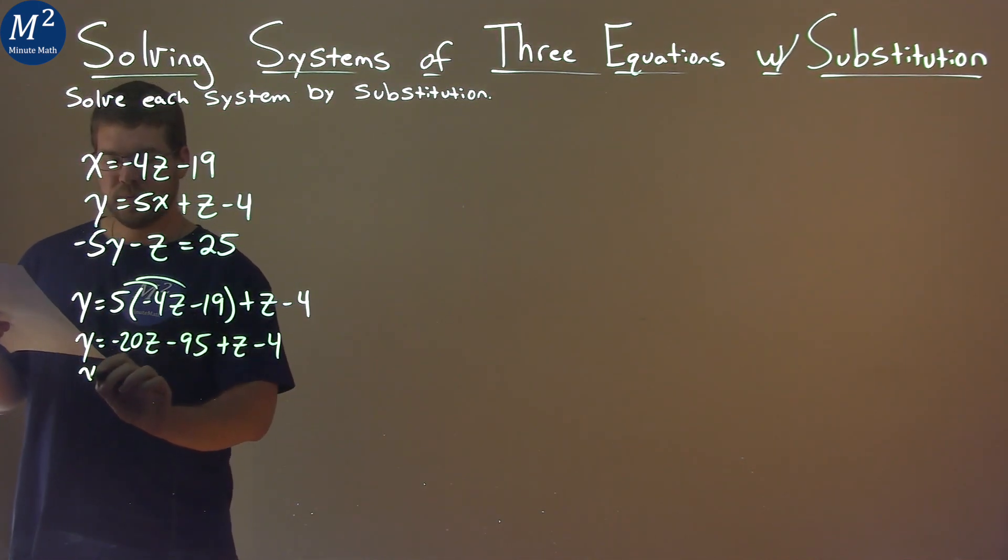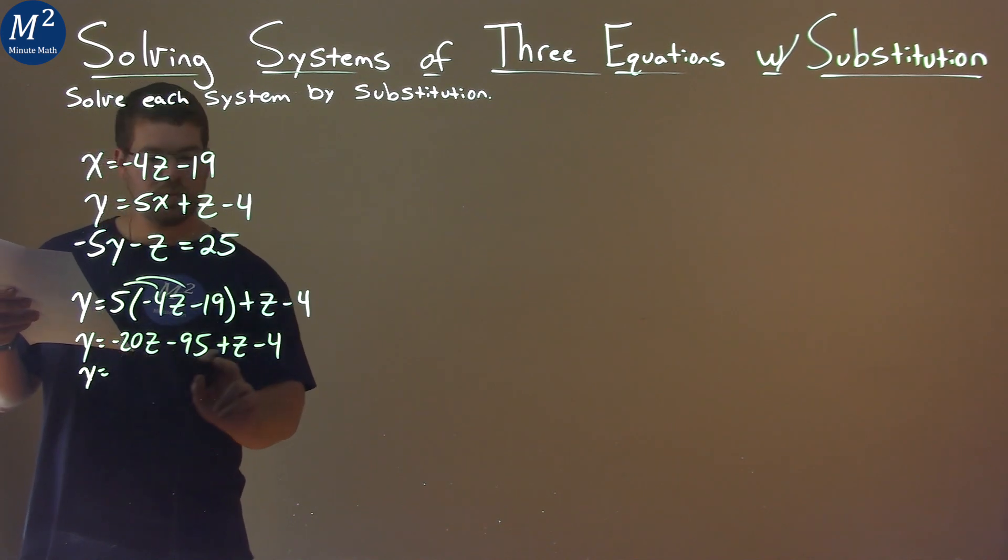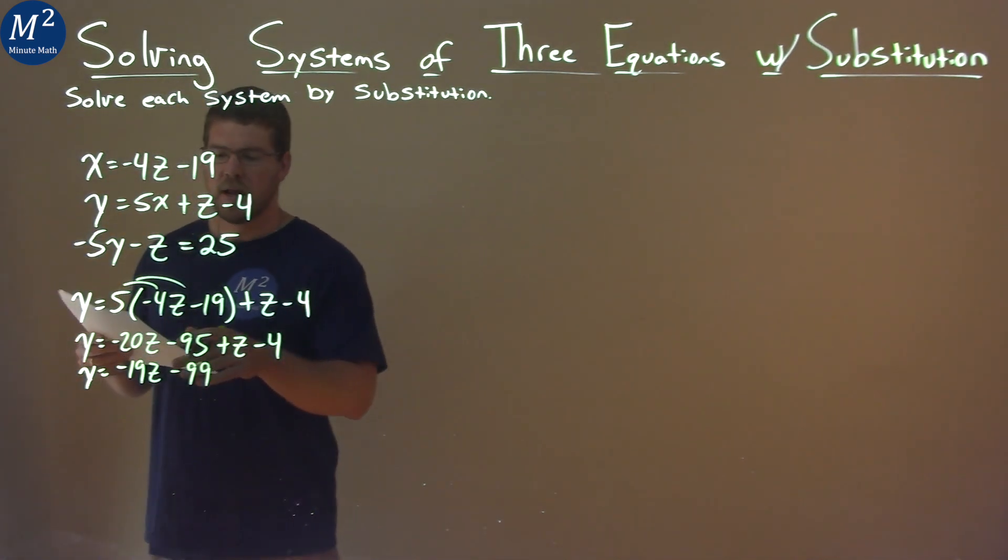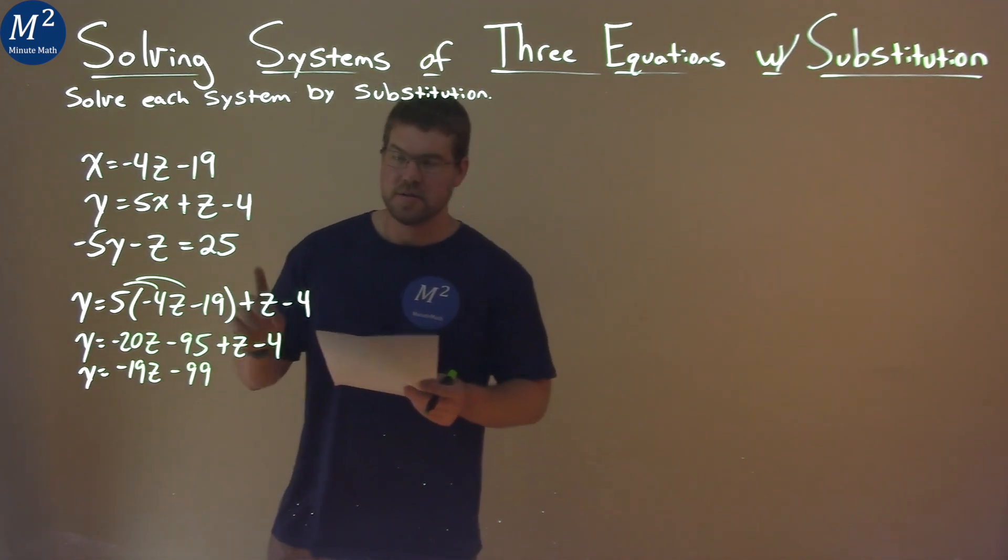Let's combine our like terms here. Negative 20z plus 1z is negative 19z. Negative 95 minus 4 is negative 99. And I'm done with this equation for the moment.